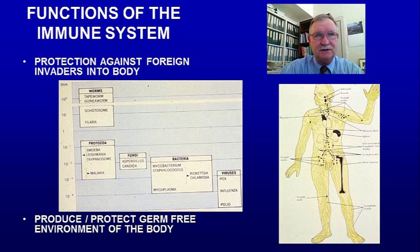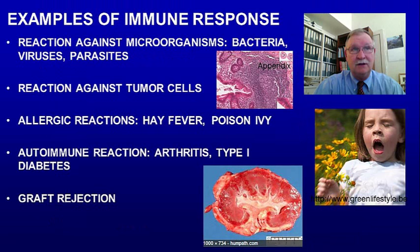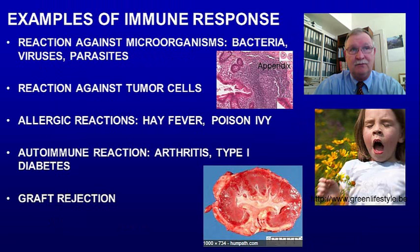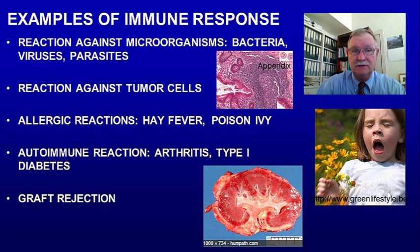There are different examples of the immune response that we all know. For example, rejection; reaction against microbes — we've all had mosquito bites where we got a swelling, or we've had a bacterial infection, viruses, or we've had the flu. Reaction against tumor cells — so we don't have cancer because our immune system has reacted to tumor cells in our body already. Allergic reactions like hay fever, poison ivy — all those are immune responses. And autoimmune reactions: arthritis is one, as well as type 1 diabetes.